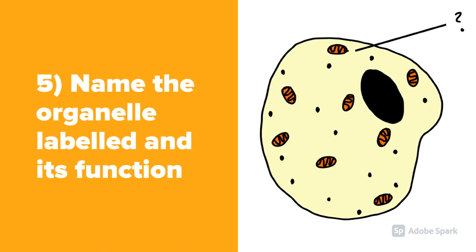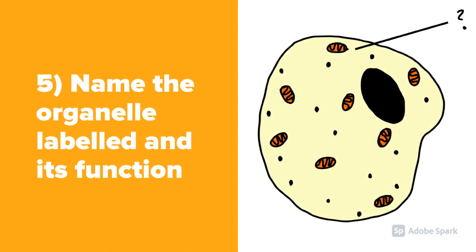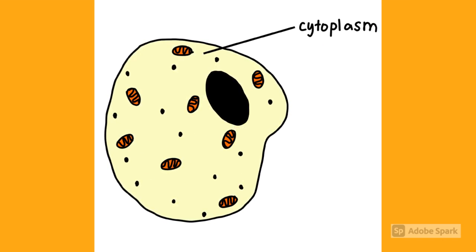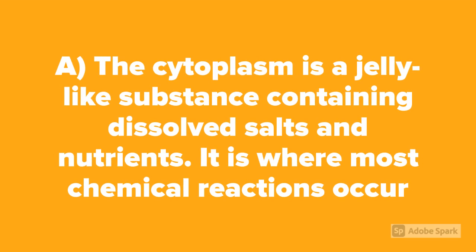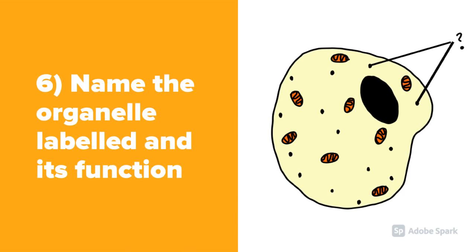Question number five: Name the organelle labeled and its function. It is cytoplasm. The cytoplasm is a jelly-like substance containing dissolved salts and nutrients. It is where most chemical reactions occur.